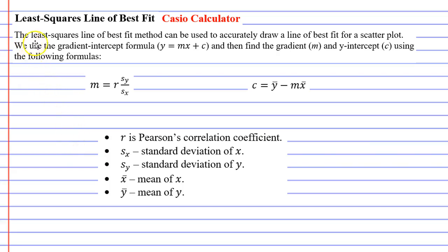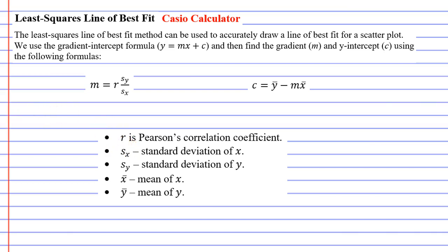This video is all about the least squares line of best fit method, which basically uses specific formulas to draw a line of best fit. This is the Casio calculator version. There's also a Sharp calculator version. When people look at these formulas and symbols they quite often become overwhelmed and think it looks too hard. The best way to tackle this is to get straight into the example and do it one step at a time.